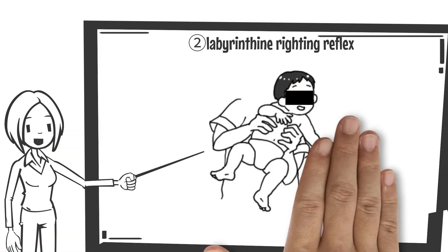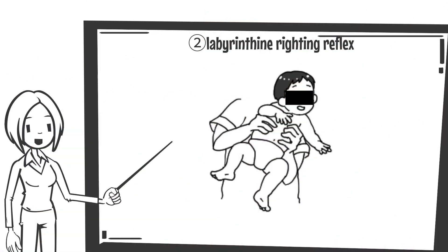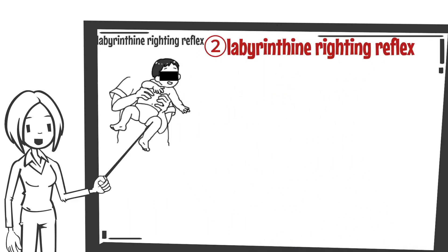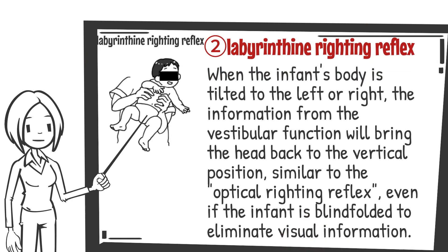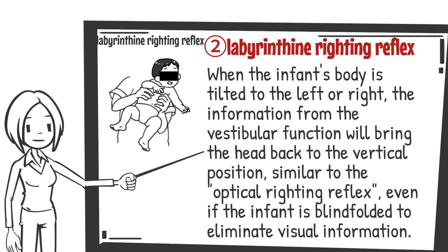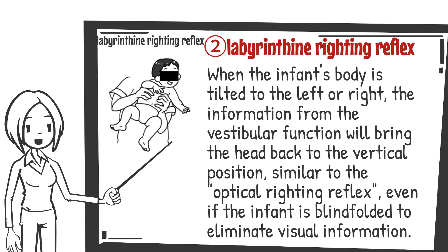Next, I will explain the labyrinthine righting reflex. The labyrinthine righting reflex refers to the reflex to tilt the infant's body to the left or right and return the head to the vertical position with information from the vestibular function, similar to the optical righting reflex, even when blindfolded and without visual information.